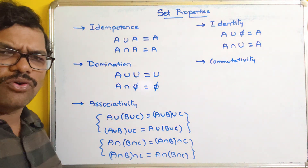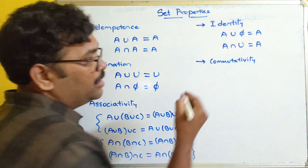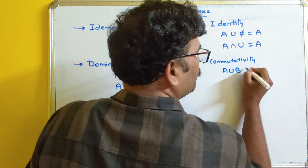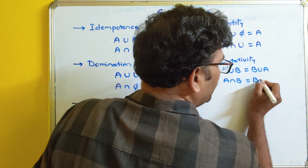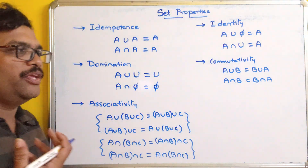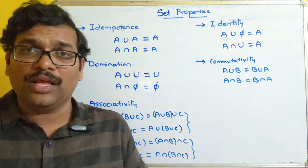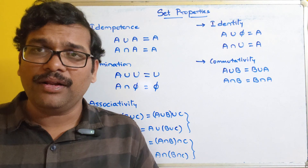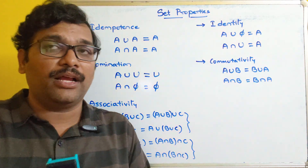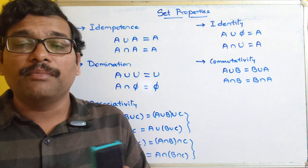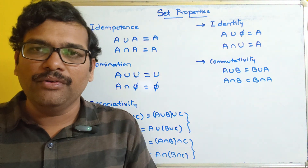Next is commutativity, also called the commutative rule. A union B is equal to B union A. Similarly, A intersection B is equal to B intersection A. Whether A comes first or B comes first, the order does not matter — we are combining elements of both sets for union, or finding common elements for intersection. This is the commutative rule.